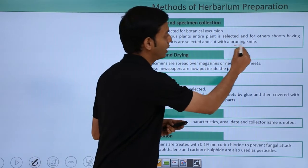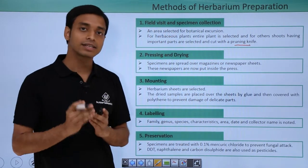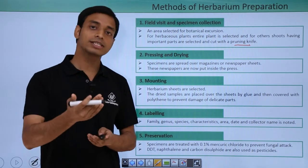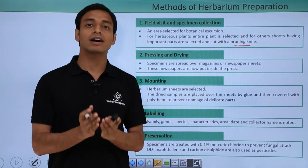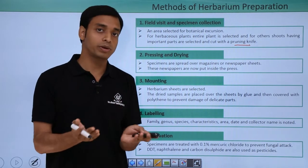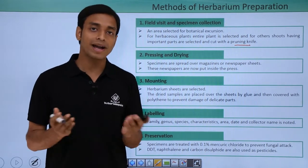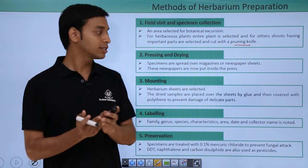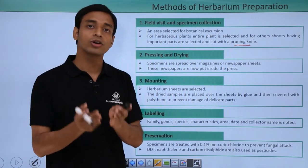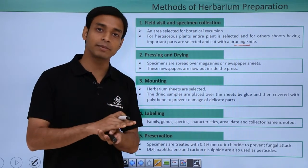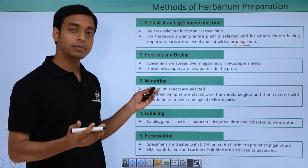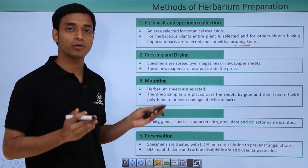The next step is pressing and drying. After the samples have been collected, they are spread evenly over newspapers, blotting papers, or magazine papers. After this, they can be put inside heavy books or a press in order to press and dry these samples.